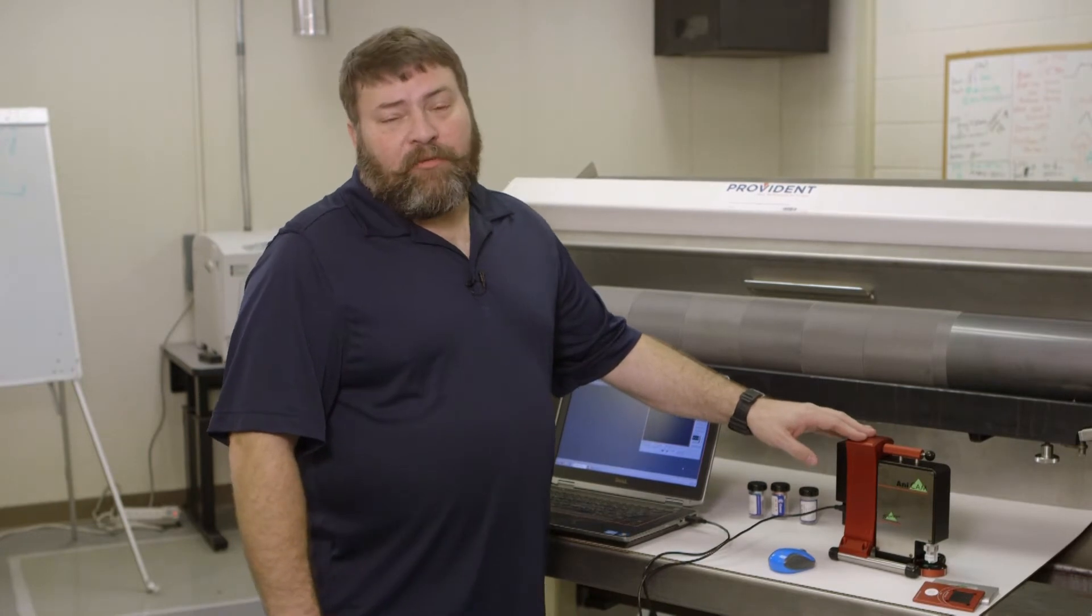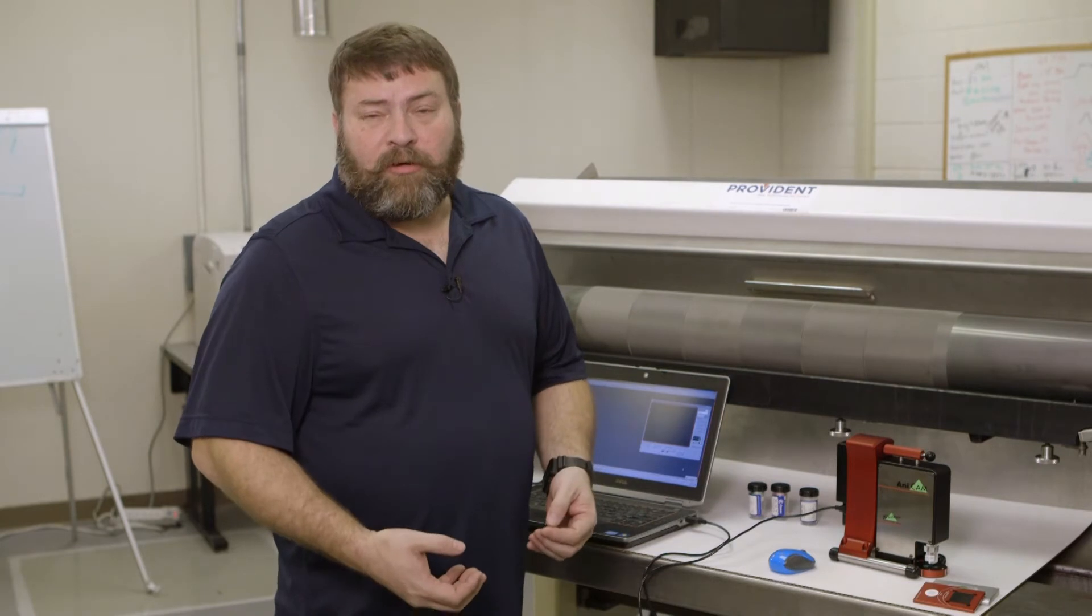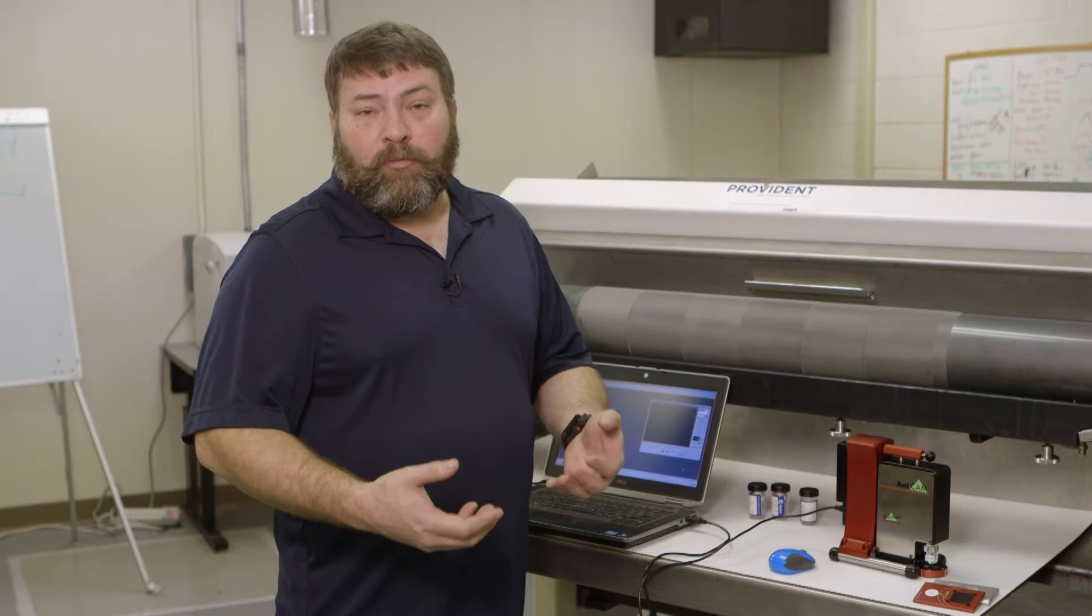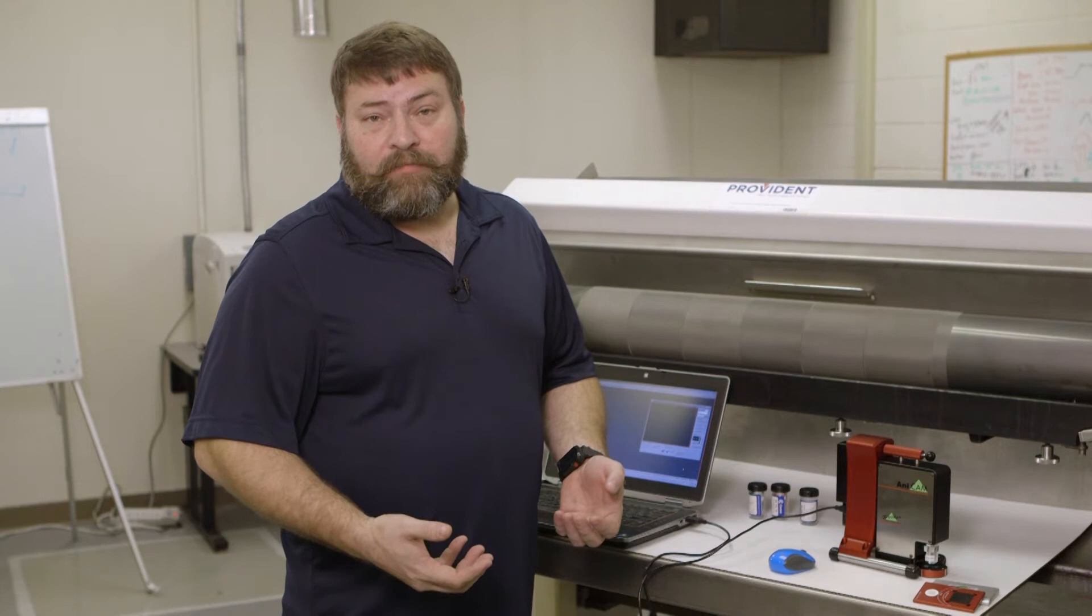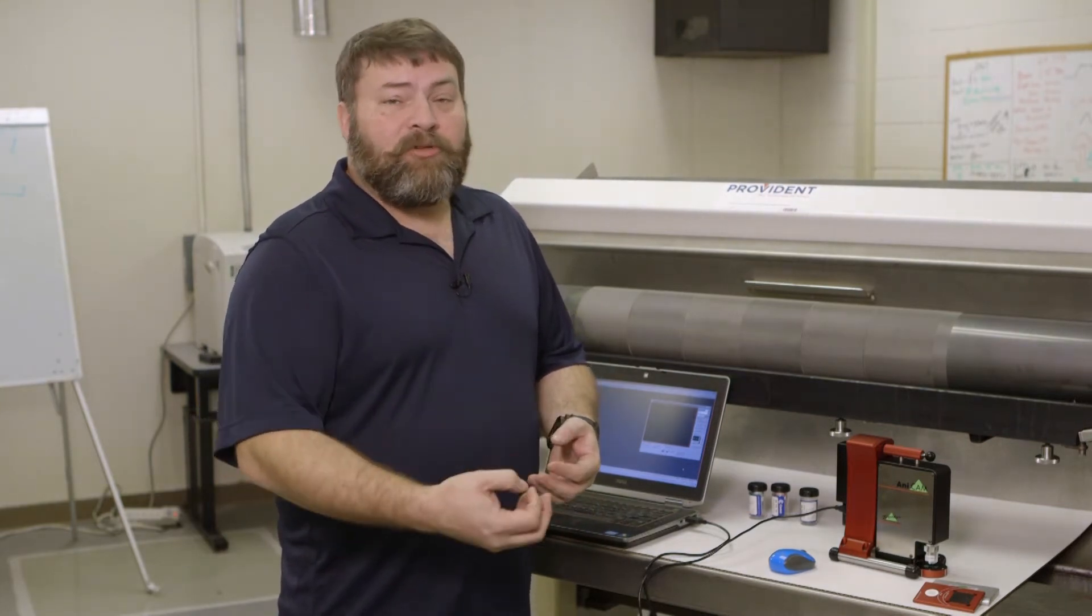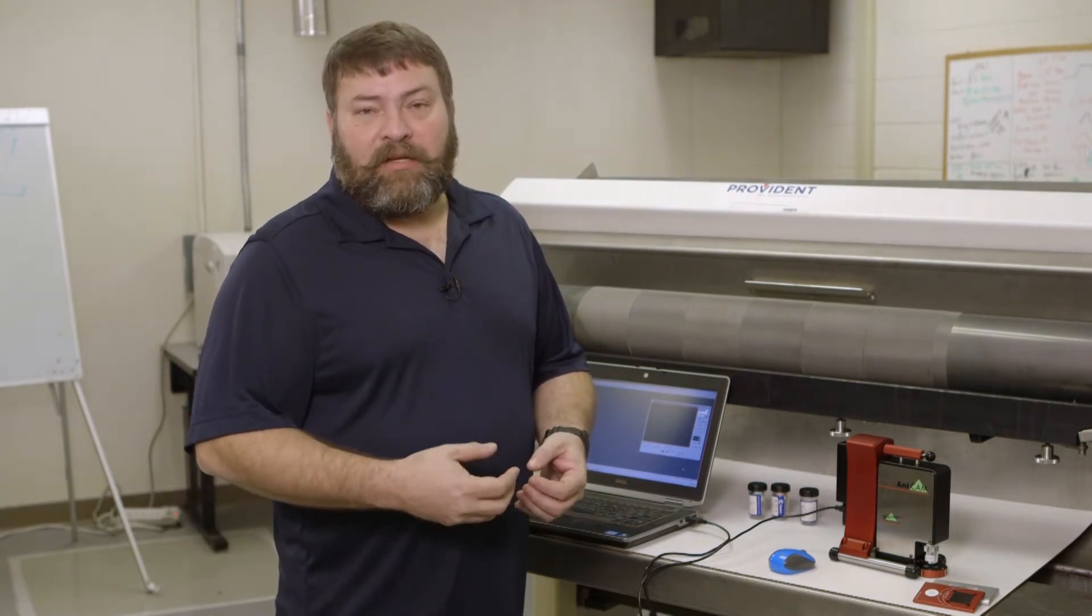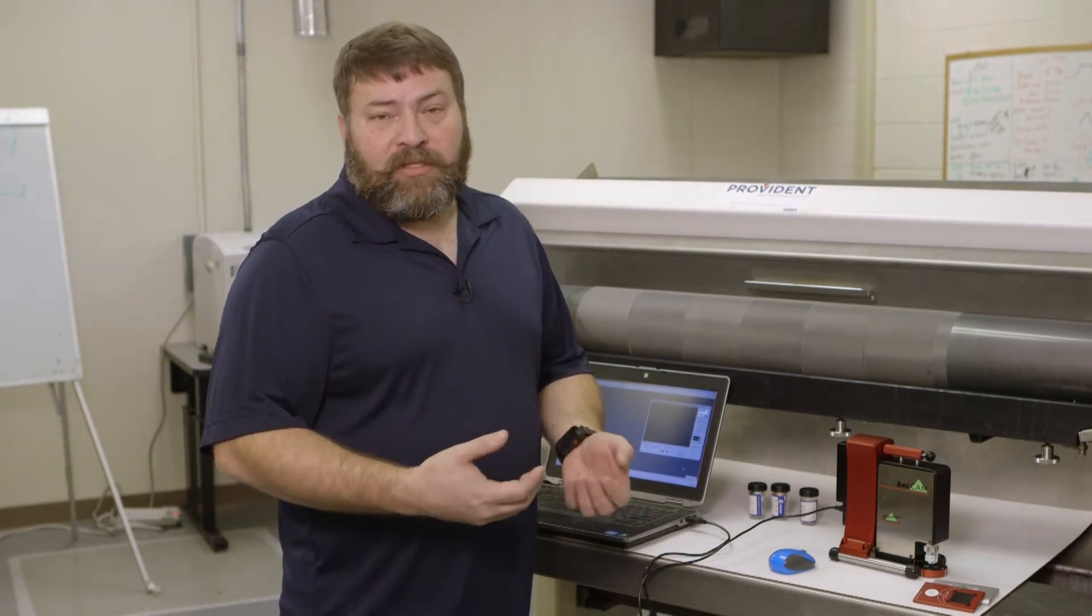The Anticam provides several different benefits for the printer. The three main benefits that we typically see return on is incoming analog roll inspection. In other words, let's make sure that the roll you get from your manufacturer is actually what it's supposed to be and that it's a quality engraving. The second part that we see is we measure the analog rolls before they go into press to make sure that they are putting out the correct volume, that they're not dirty, they're not plugged or they're not damaged.